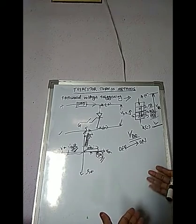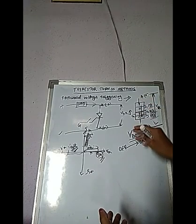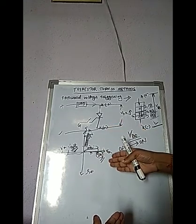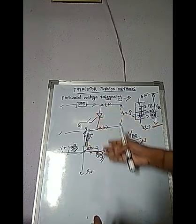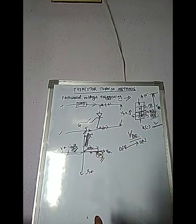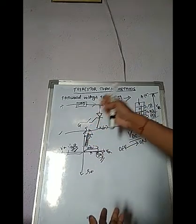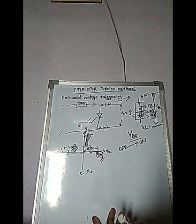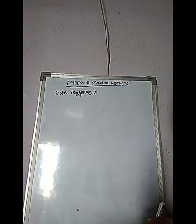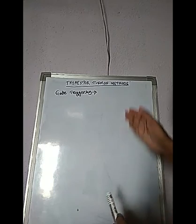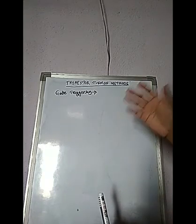To summarize forward voltage triggering: the SCR turns on when anode current increases and reaches the VBO level. At that point, voltage is high and current is also high, so this method of triggering is never employed as it may destroy the device. Gate triggering is preferred because turning on a thyristor by gate triggering is simple, reliable, and efficient — and it is the most commonly used method.